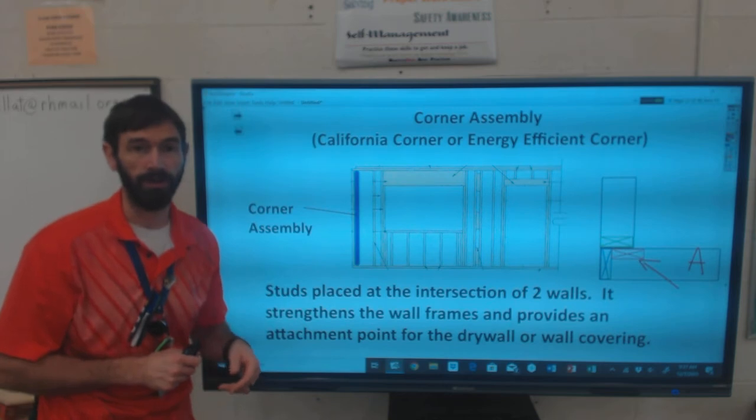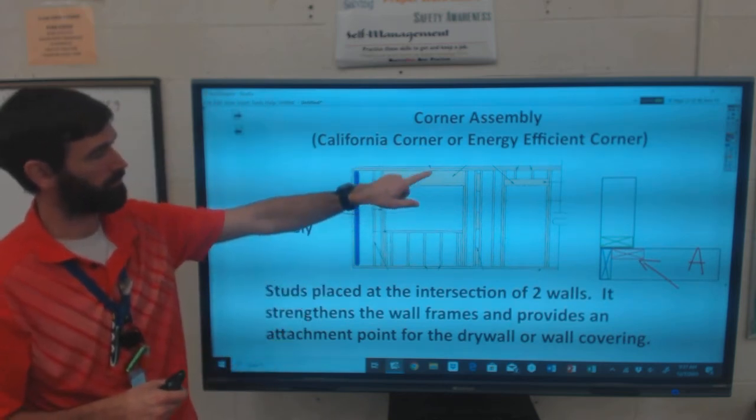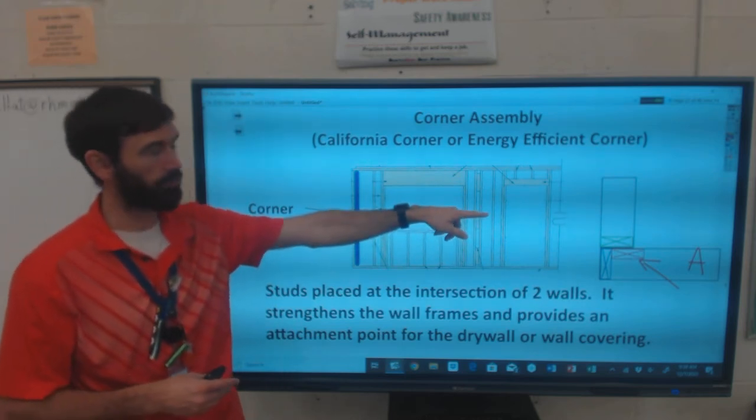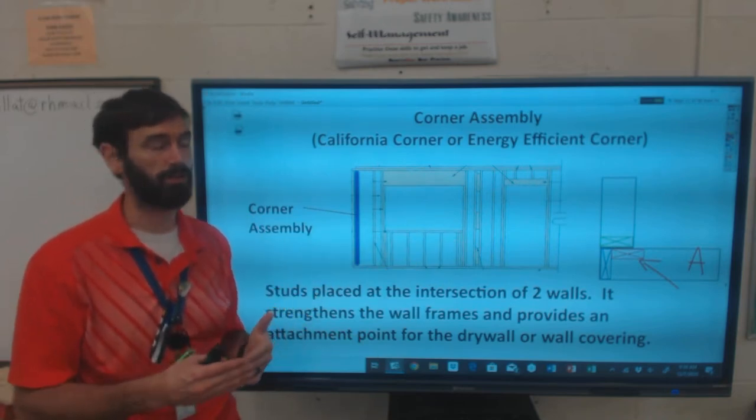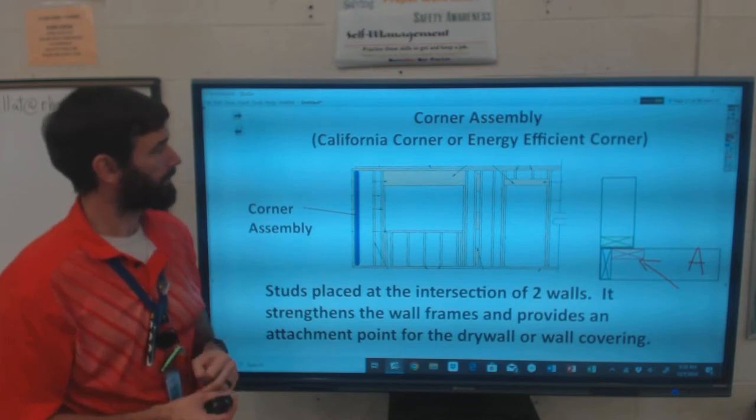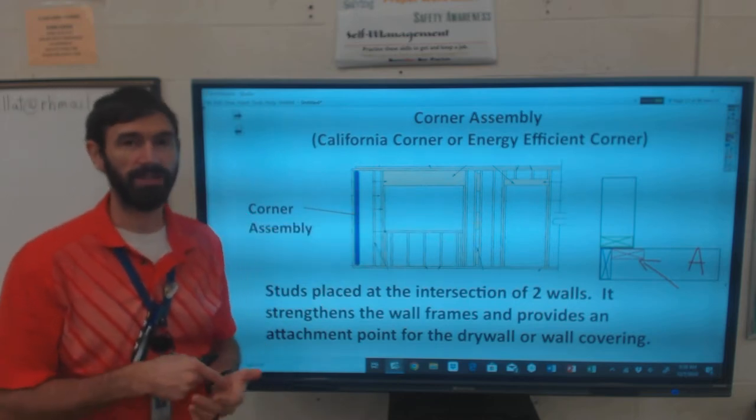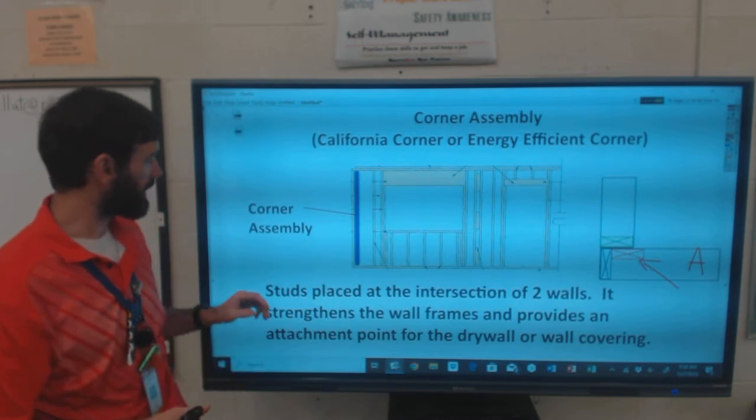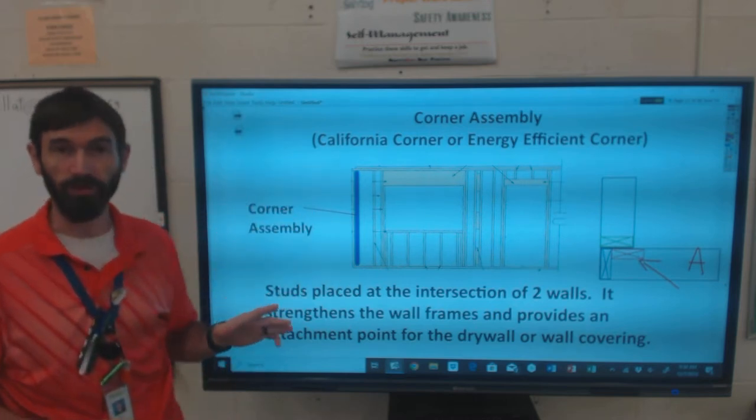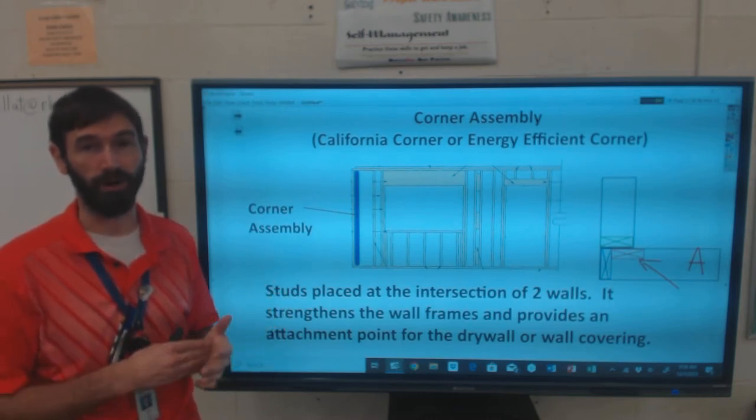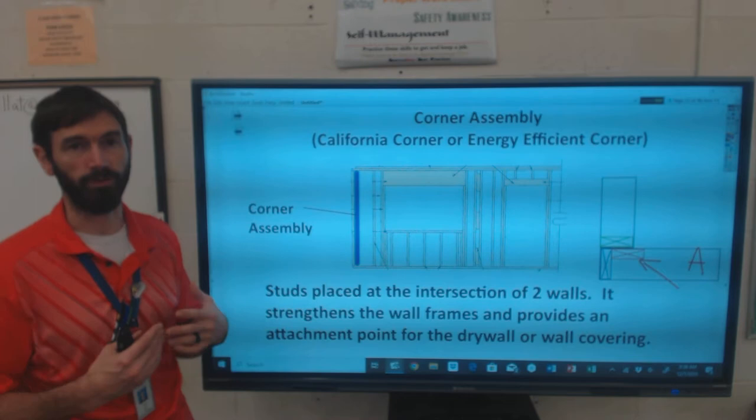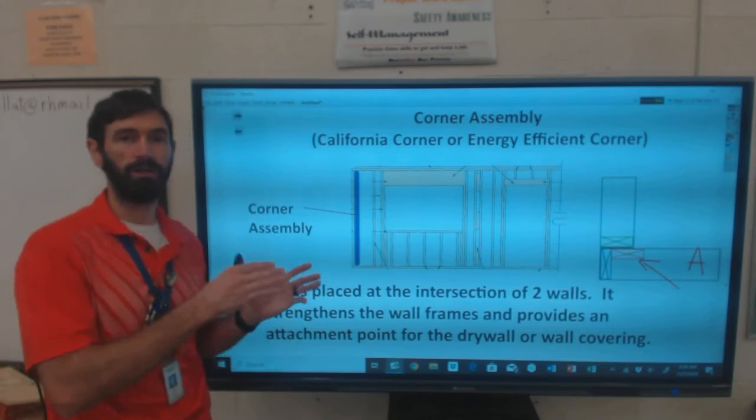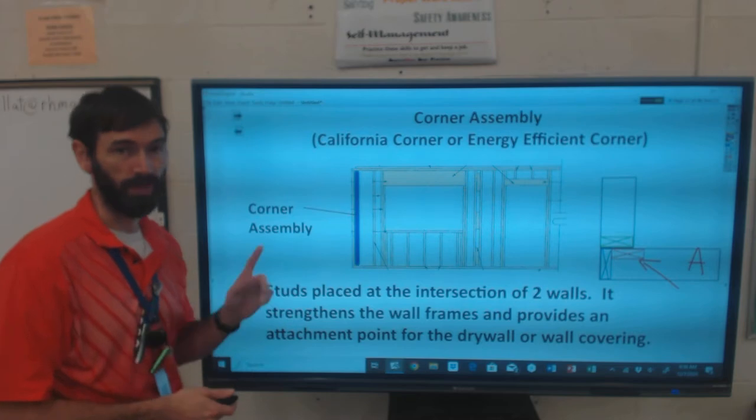Over on the other side of my screen I've got a diagram of what the layout looks like. The blue and green X's represent the end studs of your walls A and B, and that red X is the actual California corner. Again, it's placed at the intersection of two walls, strengthens the wall frame, provides a place for interior wall covering whether that's drywall, paneling, tongue and groove boards, whatever is going to be your interior wall.